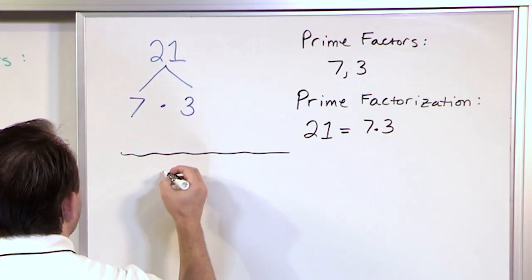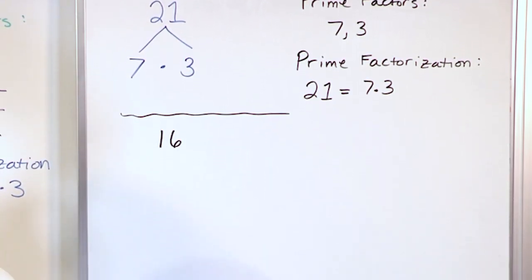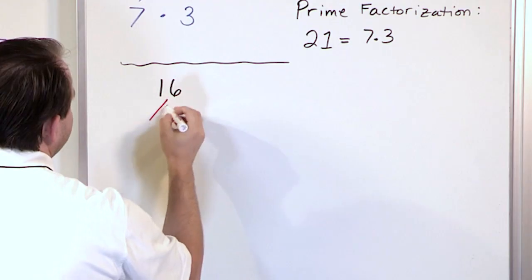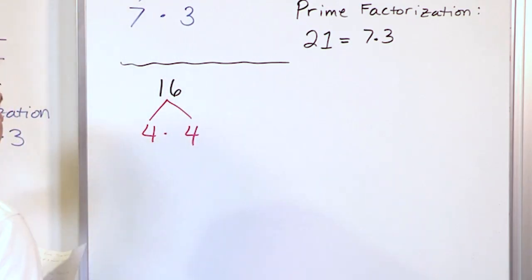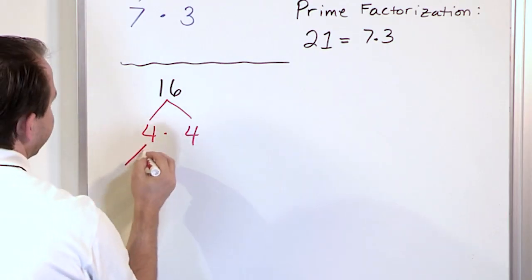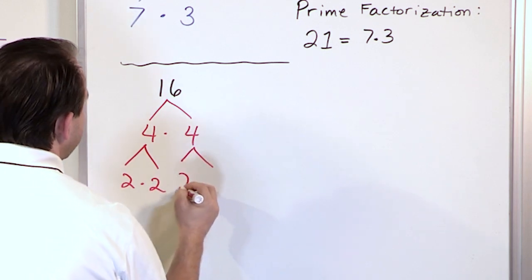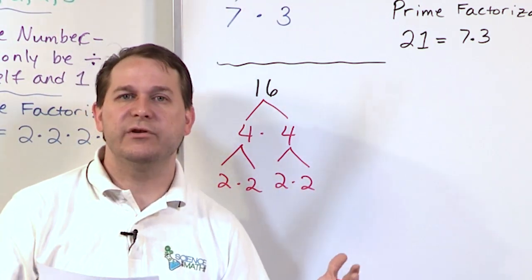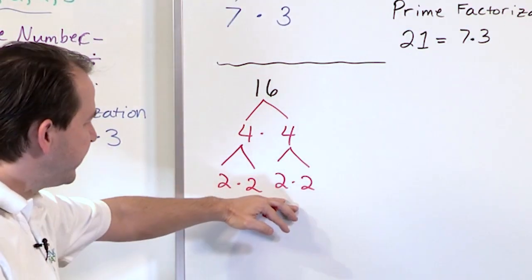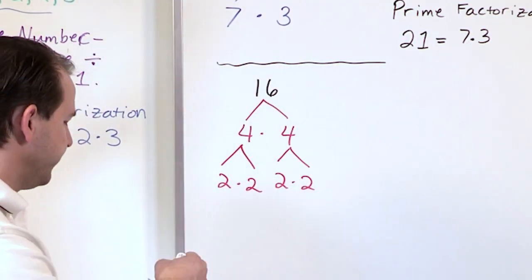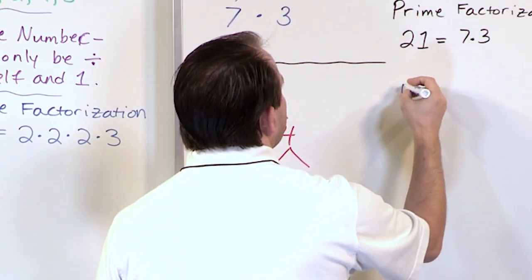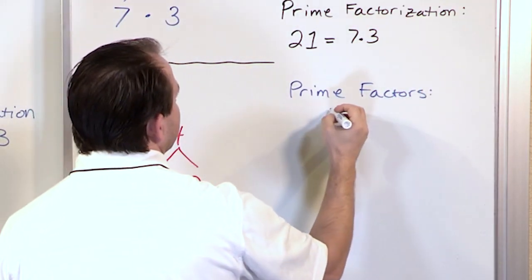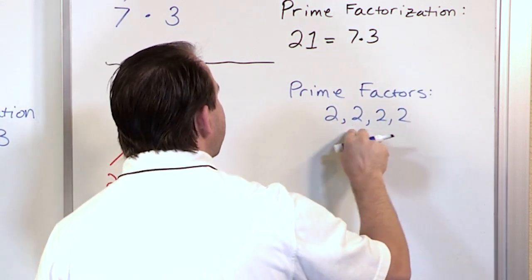Let's work on the number 16 and find its prime factorization. The first thing we want to do is figure out what times what will give us 16. Let's pick 4 times 4 — I know that equals 16. I can bust up the number 4 easily into 2 times 2, and I can bust this other 4 into 2 times 2 as well. The number 2 is prime — there's nothing else that multiplies together to give you 2 other than 2 times 1. So the tree is done. All we have is a bunch of 2's at the bottom, and the prime factors are 2, 2, 2, 2.